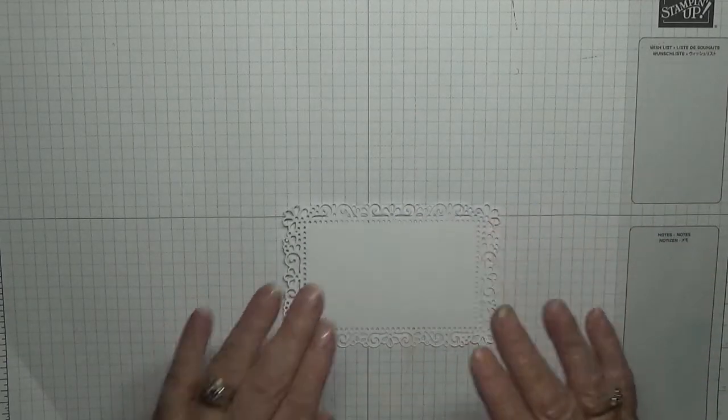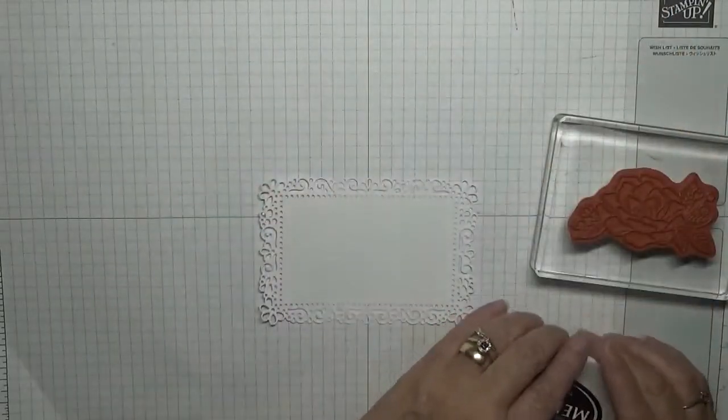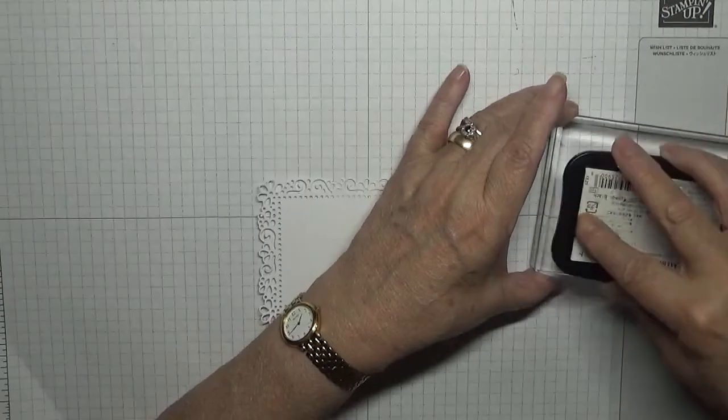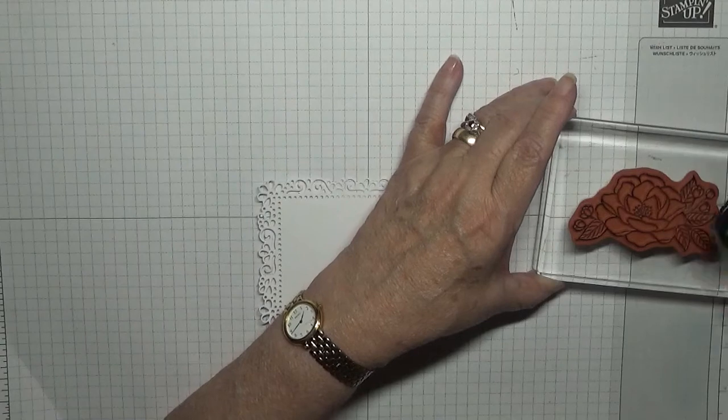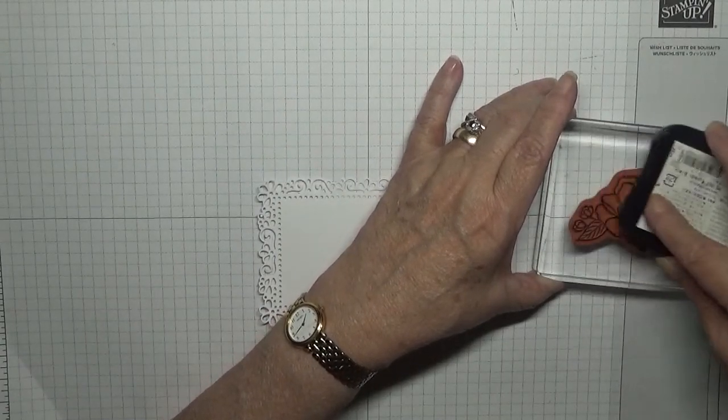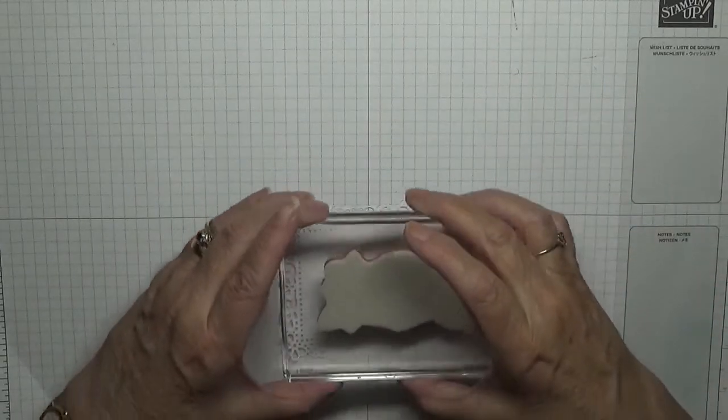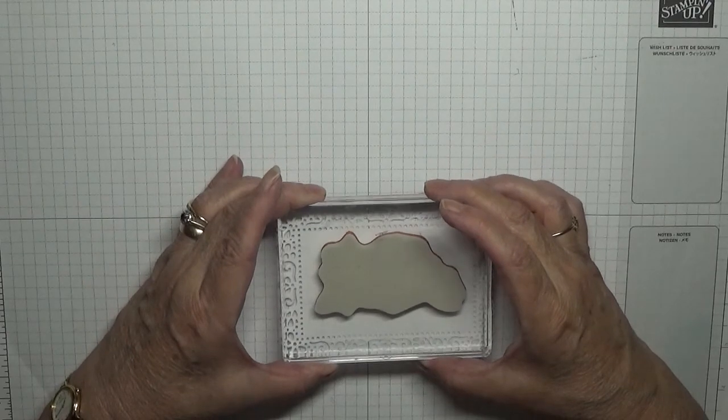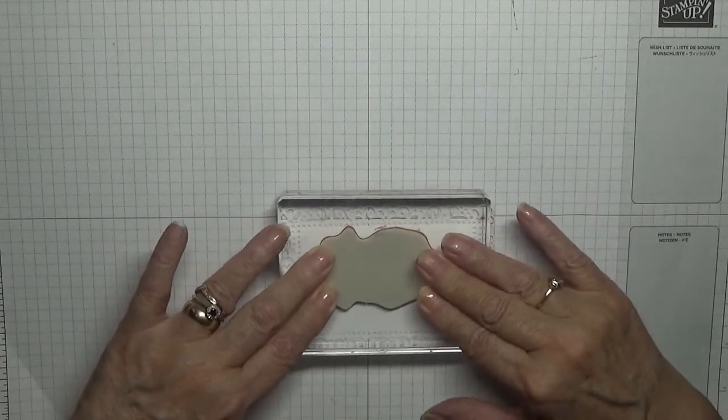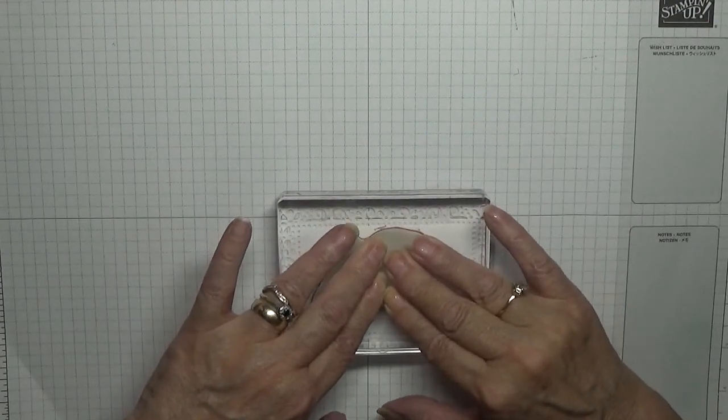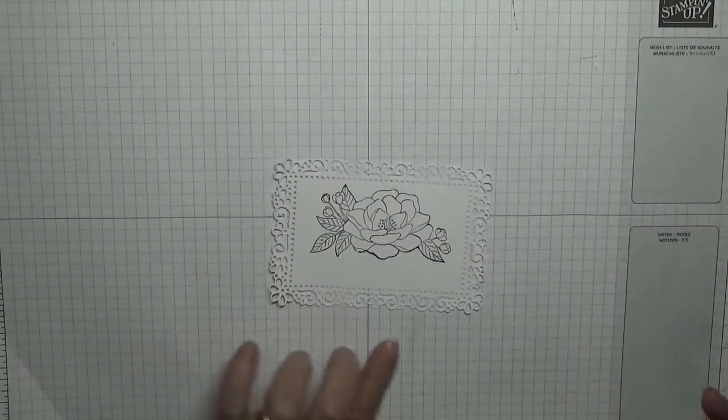Bring this over. With my flower and Memento black ink, ink up the flower, and we're going to place it as high as we can not going into the holes. There we are.